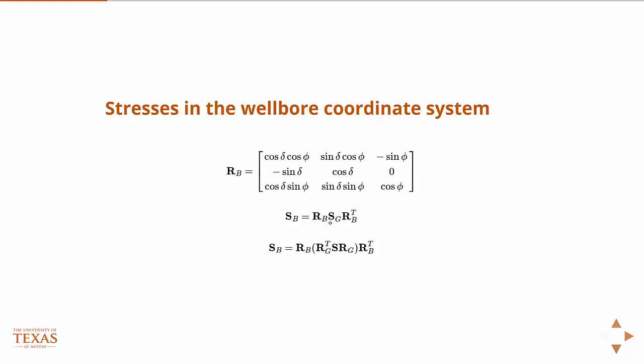we can use that rotation matrix to convert the principal stresses. So we know that Sg, that's the stress tensor in geographical coordinates. We can get the stress tensor in geographical coordinates from the principal stress tensor through the rotation matrix Rg. So if we perform this rotation first, this goes from principal stress to geographical coordinate system, and then this goes from geographical to borehole. And then we can get the stress tensor in the borehole.